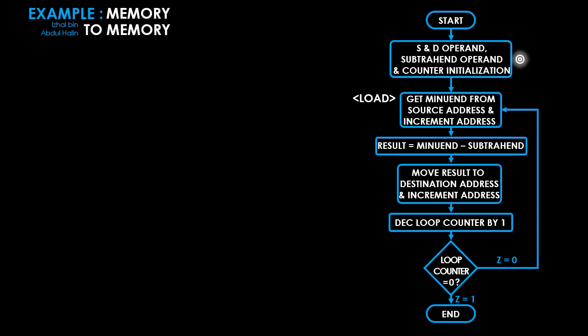We also need to initialize a loop counter, since a loop will be used to execute repeated instructions. The second process is to retrieve data from memory — our minuend — with a label named 'load' attached, marking the start of the loop. The third process executes the subtraction; the fourth writes results back to memory; the fifth decrements the counter by one. The sixth process is a decision: branch and repeat from the second process as long as the counter is not zero.